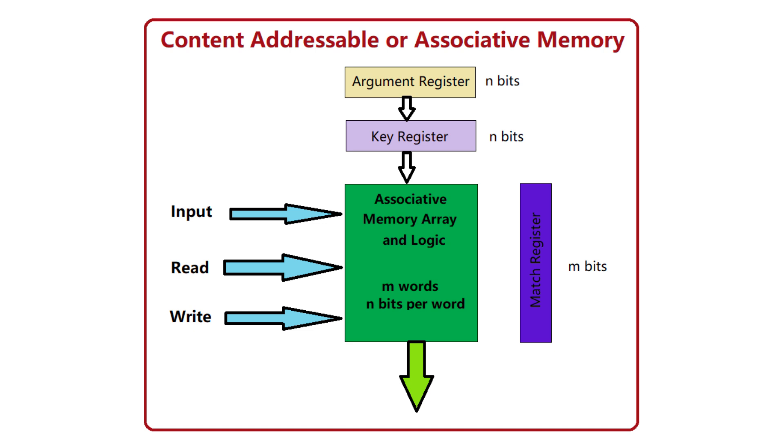Think of it like searching for a specific book in a library. In traditional RAM, you'd need the exact shelf position. With associative memory, you could just say 'I want the book about algorithms' and the library magically finds it for you. I'm sure we all wish our computers could do that.